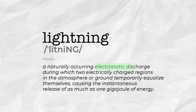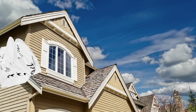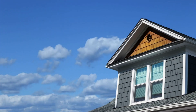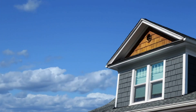Lightning is a naturally occurring electrostatic discharge during which two electrically charged regions in the atmosphere or ground temporarily equalize themselves, causing the instantaneous release of as much as one gigajoule of energy. That's enough energy to power your house for almost nine days.